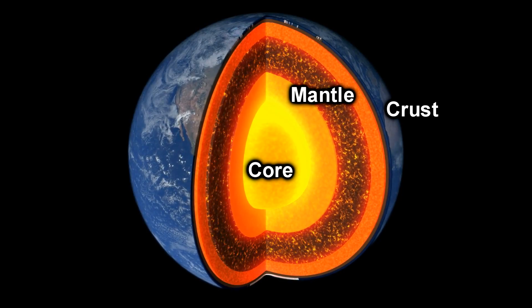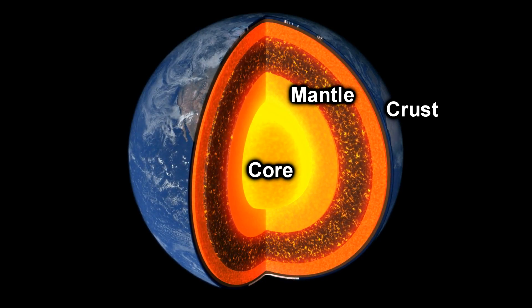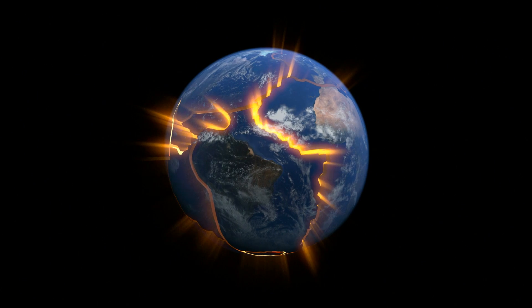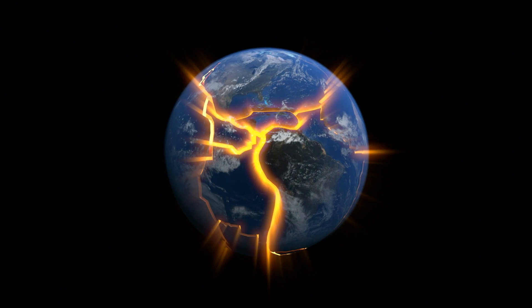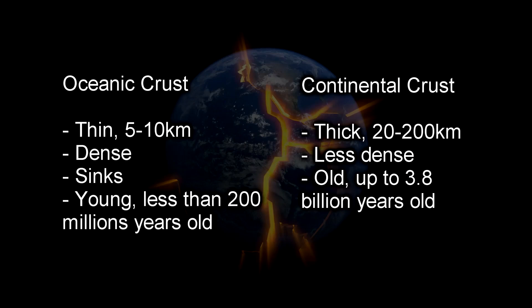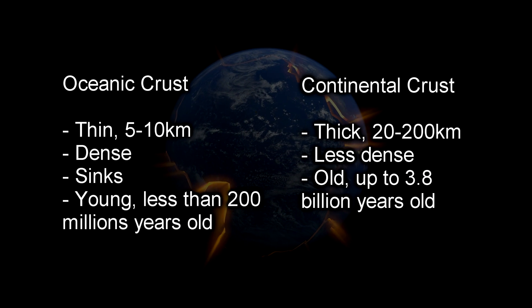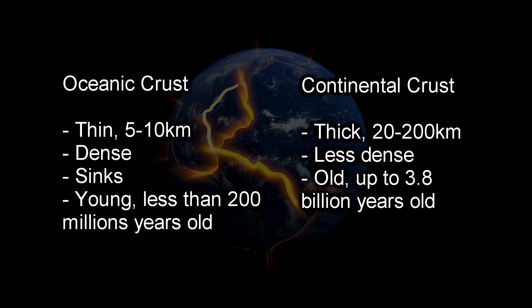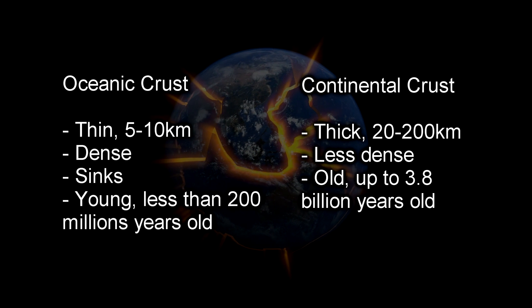We just need to remember the basic structure of the earth: we've got the core, the mantle, and the crust, and we've got those different plate margins as well. Around the earth we've got two different types of crust — oceanic crust and continental crust. Oceanic is thin whereas the continental is thick.